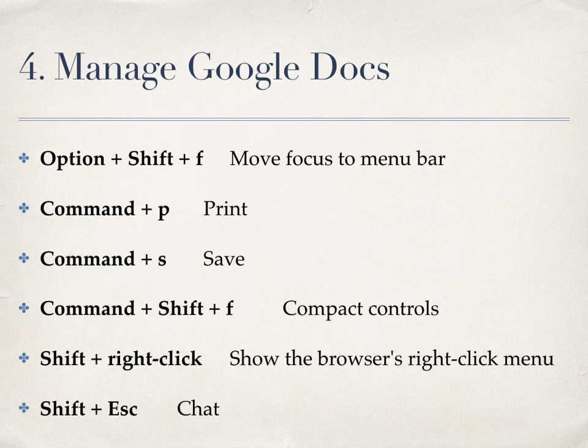Manage Google Docs. Move focus to menu bar: Option plus Shift plus F. Print: Command plus P. Save: Command plus S. Compact controls: Command plus Shift plus F. Show the browser's right-click menu: Shift plus Right Click. Shift plus Escape.